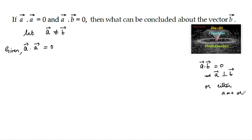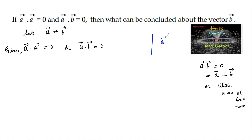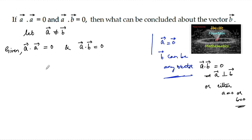So here, a·a = 0 means either a is perpendicular to a, or a = 0. But a vector cannot be perpendicular to itself, so vector a must equal 0. Also given a·b = 0, since vector a is 0, the dot product being 0 means b can be any vector — if a is the zero vector, the dot product between the zero vector and any vector b is always 0.